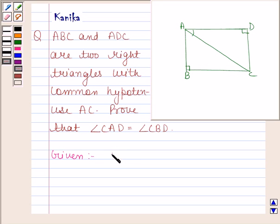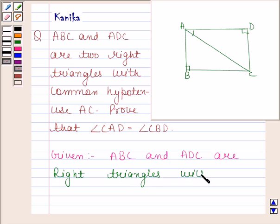We are given that ABC and ADC are right triangles with common hypotenuse AC.